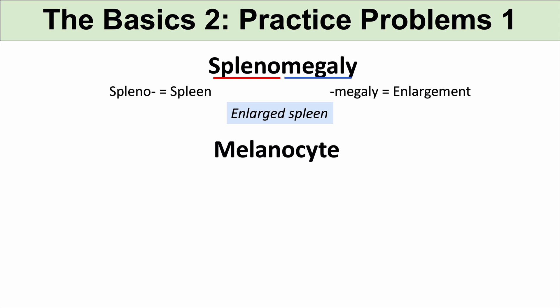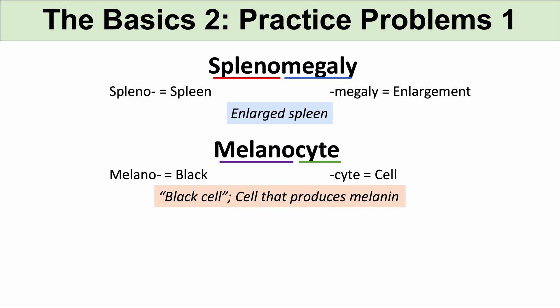The next practice problem is melanocyte. If you break this down, the prefix melano means black, the color black. And the suffix cyte means cell. So when we put this together, it literally means a black cell, but it's actually a cell that produces the pigment melanin. So melanocyte is a cell that produces melanin.